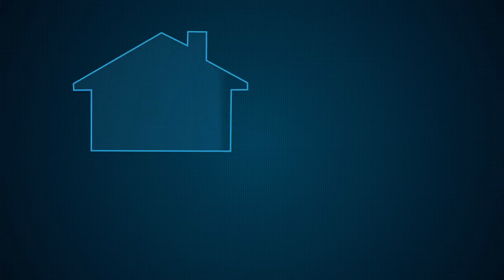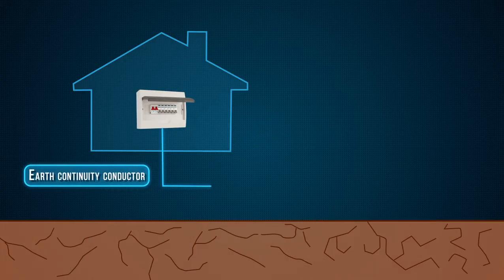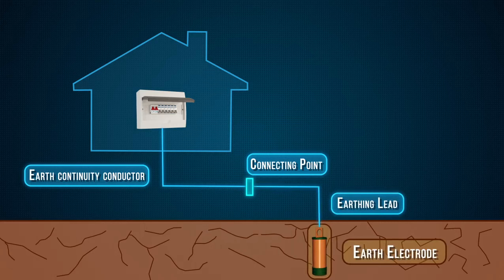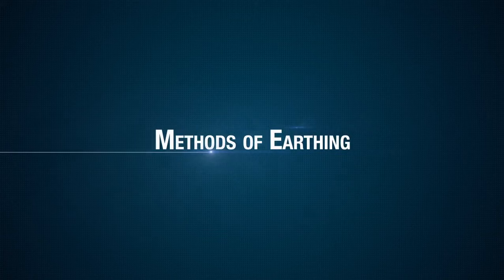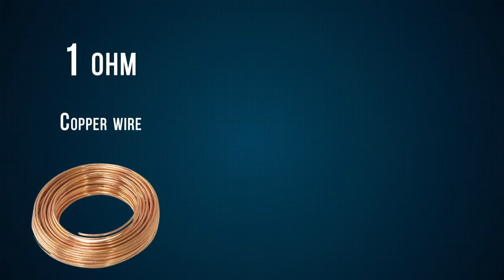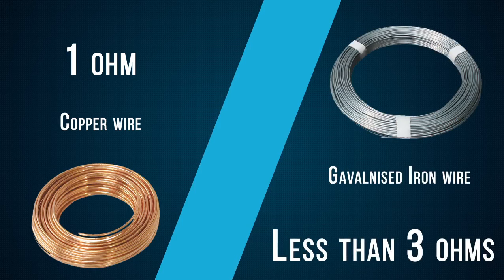Components of earthing system. A complete electrical earthing system consists of basic components: earth continuity conductor, earth, and earth electrode. Methods of earthing: the earth resistance for copper wire is 1 ohm and that of galvanized iron wire is less than 3 ohms. The earth resistance should be kept as low as possible. The typical value of earth resistance is 0.5 to 1 ohm.